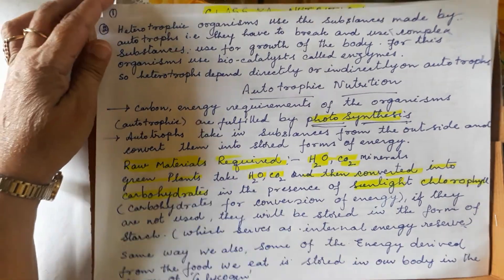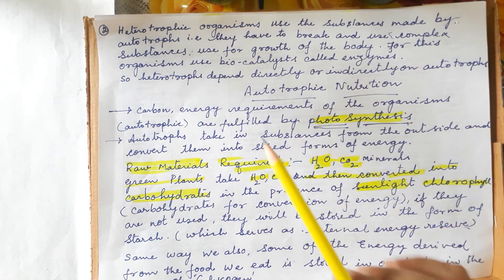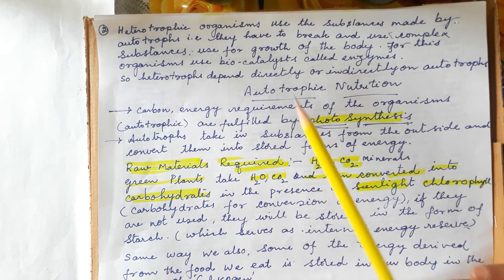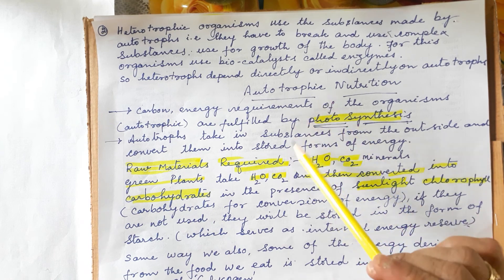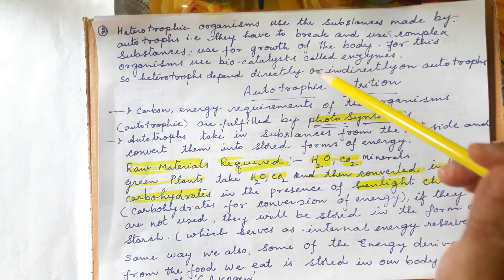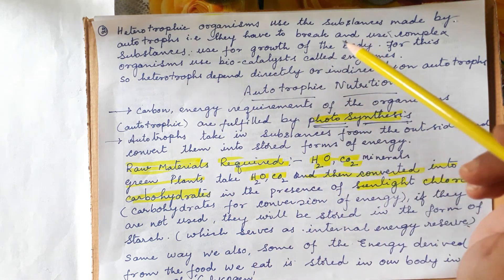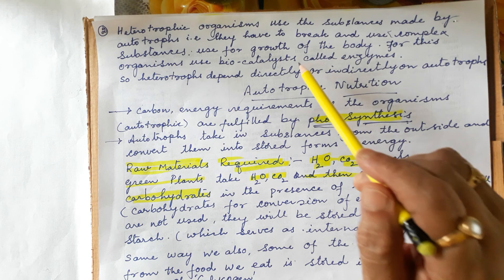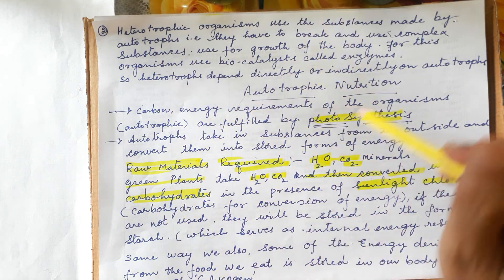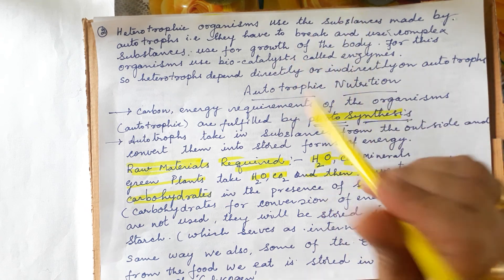Now, heterotrophic organisms directly or indirectly use the substances made by autotrophs. Heterotrophs take substances made by plants and use them with the help of biocatalysts. These biocatalysts are enzymes, which help digest food in heterotrophs. Enzymes are proteins. I am making small videos, and the next video will continue after a few minutes.